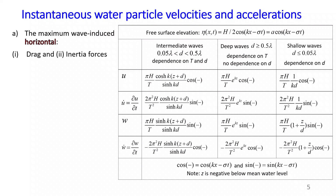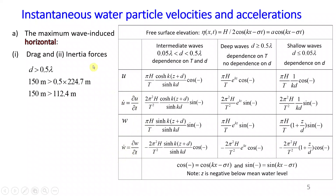In this problem we are asked to calculate the maximum wave-induced horizontal drag and inertia force. Therefore, we will be dealing only with the horizontal velocity component and the horizontal acceleration component — we are not calculating vertical drag or vertical inertia force. To determine the wave type: our depth d, which is 150 meters, should be greater than or equal to 0.5 multiplied by wavelength. Indeed, 150 meters is greater than 112.4 meters, which is half the wavelength. Therefore, we are dealing with deep waves.